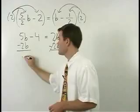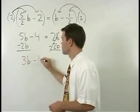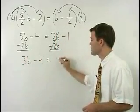That gives us 3b minus 4 equals negative 1.